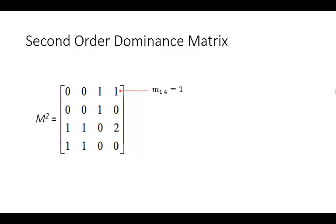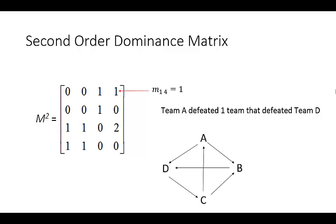So this element 1,4 is a 1. That means team A defeated one team that defeated team D. So let's have a look at our situation again. B defeated team D and team A defeated team B. So that's what that 1 represents.